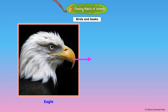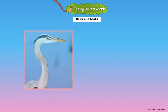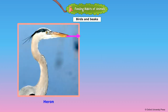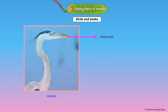Birds have no teeth, so they cannot bite or chew — they peck at food. Birds use their beaks to cut open, tear, or crush the food they eat. Flesh-eating birds such as the vulture, eagle, and owl have sharp curved beaks to tear out flesh. Birds such as stork and heron have long beaks to catch fish.